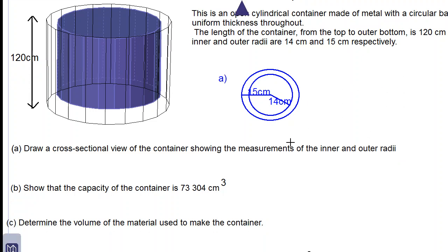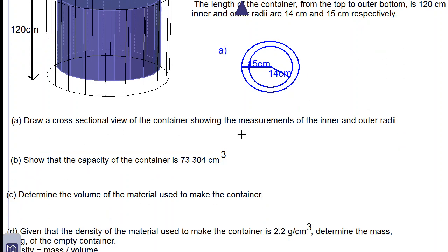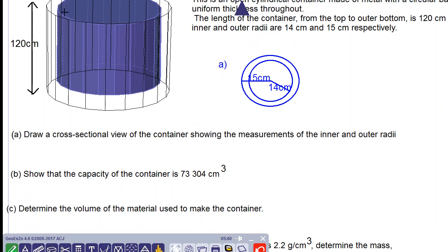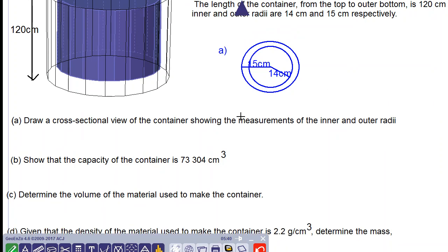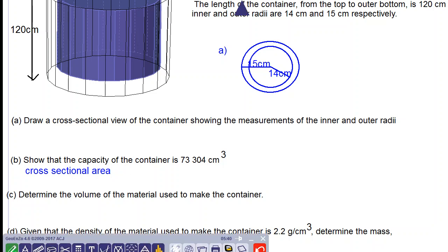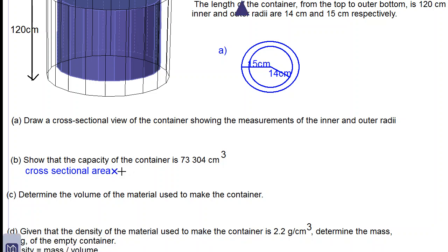Let's look at part B. Show that the capacity of the container is 73,304 cm cubed. What we do is we find the volume of the blue region. We use cross-sectional area multiplied by height.